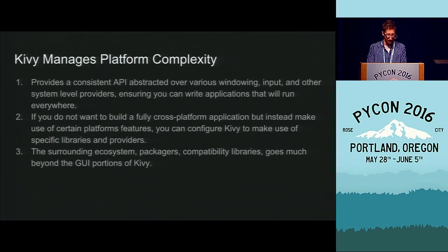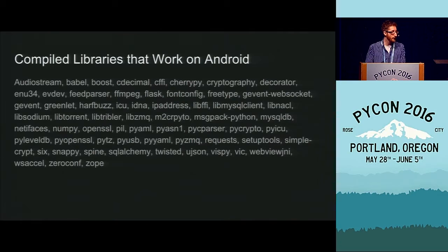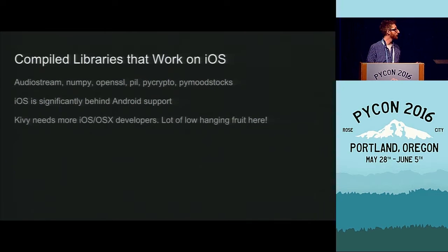Kivi is far more than just a GUI platform. It's an ecosystem of packaging tools, compatibility libraries, and pretty much everything you need to get a fully functional app deployed on Android. For instance, these are all of the compiled libraries commonly used in Python that are already ready for use on Android — they had to be patched or given special compiler instructions, but the Kivi community has already taken care of that for you. Unfortunately on iOS, we're significantly behind, and we do need more iOS and OSX developers. There's a lot of low-hanging fruit — come to the Kivi chat channel or user group and get started.